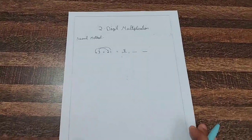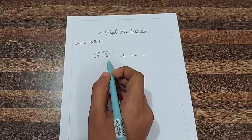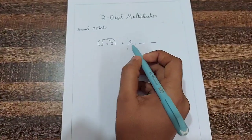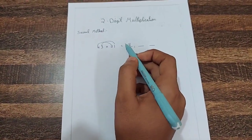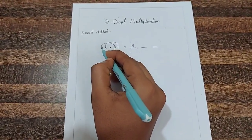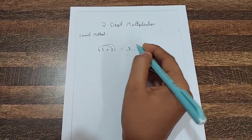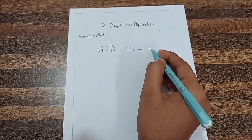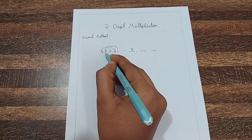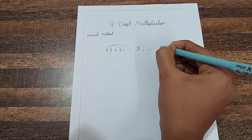Let's also try another method. We'll take 43 and 21 as an example. Mark 3 blanks. In the first blank we need to multiply the tens place digits — that means the first digit in the first number and the first digit in the second number: 4 into 2 is 8. And to fill the last blank we need to multiply the unit digits — that means the second digit in each number: 3 into 1 is 3.